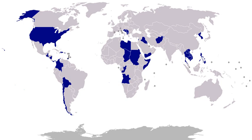1954–1955, China: naval units evacuated U.S. civilians and military personnel from the Tachen Islands. 1955–1964, Vietnam: first military advisors sent to Vietnam on February 12, 1955. By 1964, U.S. troop levels had grown to 21,000. On August 7, 1964, U.S. Congress approved the Gulf of Tonkin Resolution affirming '...all necessary measures to repel any armed attack against the forces of the United States, to prevent further aggression, and assist any member or protocol state of the Southeast Asian Collective Defense Treaty requesting assistance.'